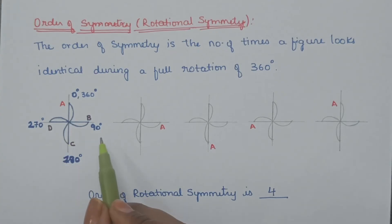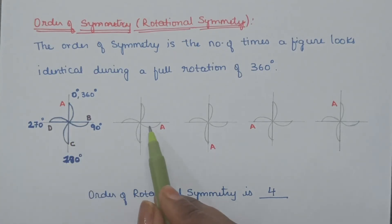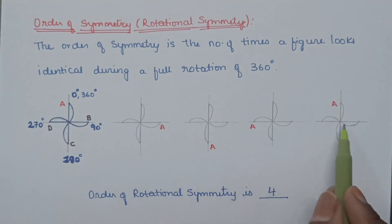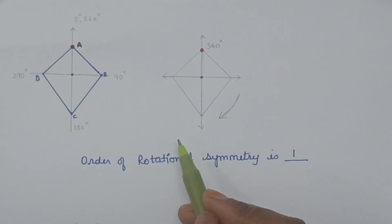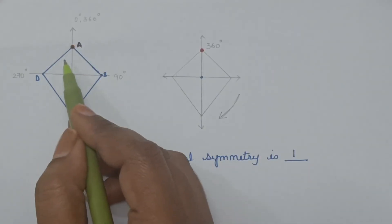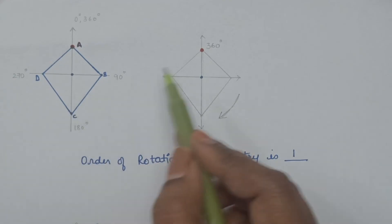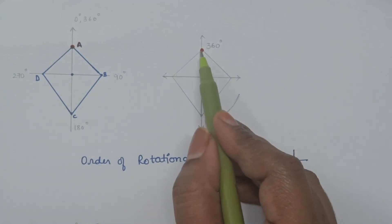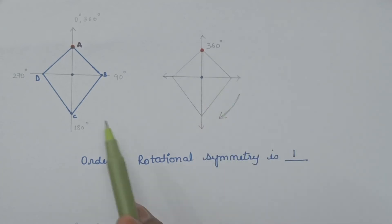So the order of symmetry of this figure is 4. When another figure rotates, its image is identical to its pre-image only at 360 degrees, so the order of rotational symmetry of that figure is 1.